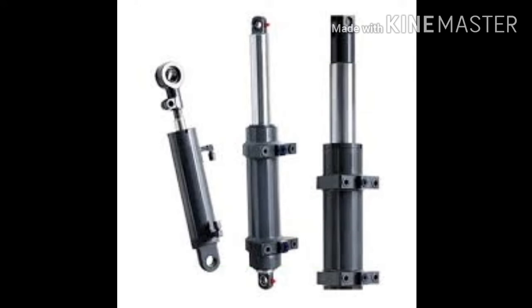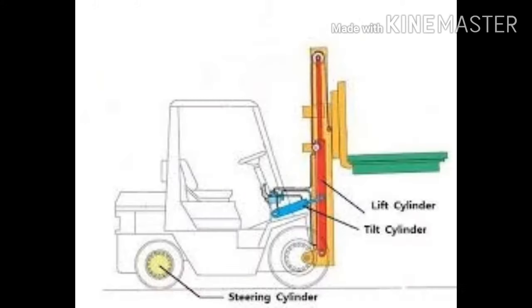There are at least three cylinders used on a forklift: the lift cylinder, tilt cylinder, and power steering cylinder. The lift cylinder is a single-acting hydraulic cylinder, pushing in only one direction. The control valve directs fluid to the cylinder and rod when placed in the lift position.